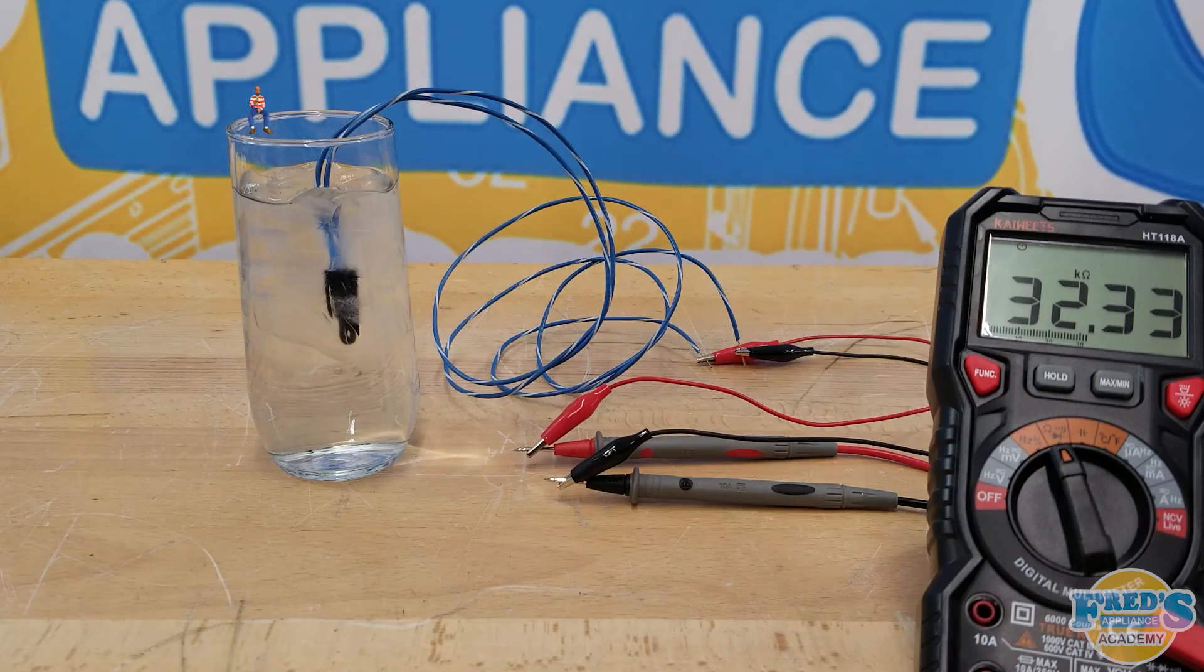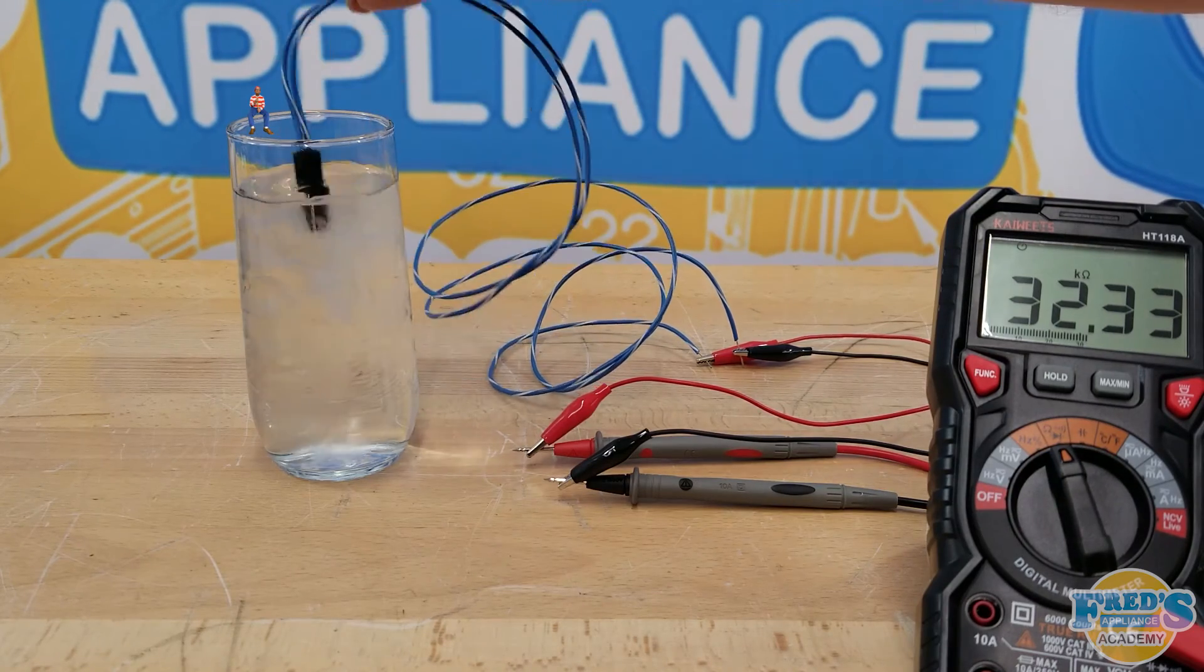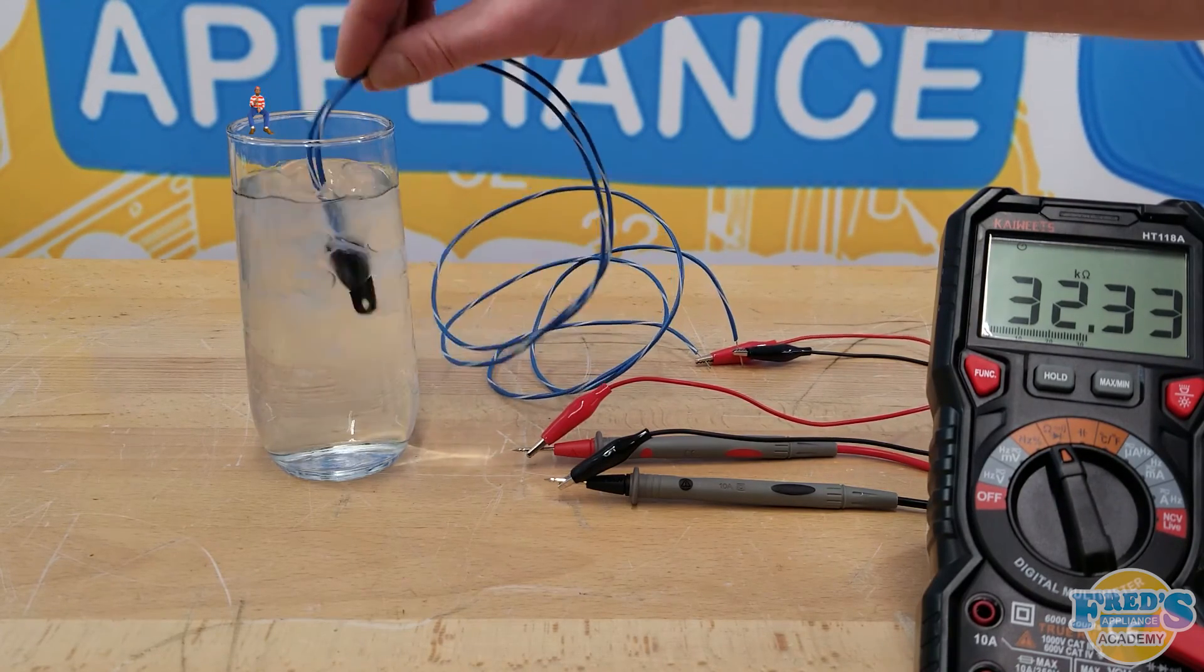Here we can see our thermistor reaches a resistance value of 32,330 ohms which falls perfectly within range.